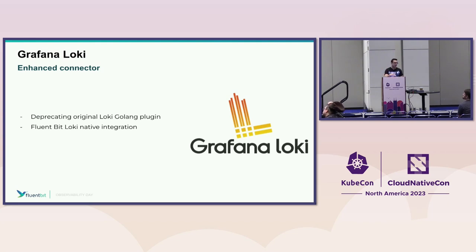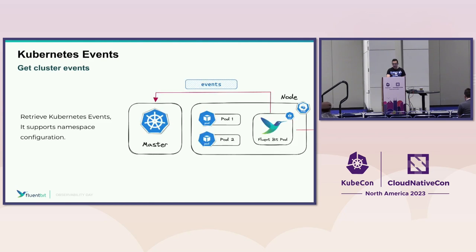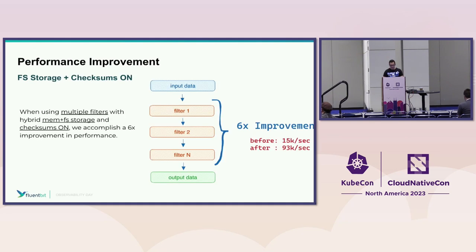We have a new plugin to collect Kubernetes events for audit logs and security. And there's a performance improvement with a six-times speedup when chaining filters for data processing. In one example, throughput went from 15,000 messages per second to 93,000 messages per second. Also, there's a free early-access Fluent Bit book for Kubernetes being written by a community member and sponsored with Manning — scan the QR code to get one chapter per month until release.